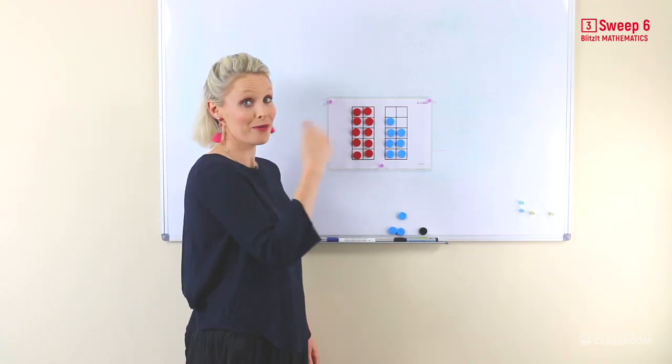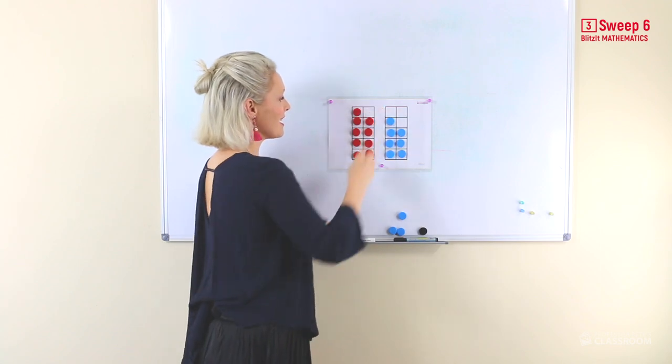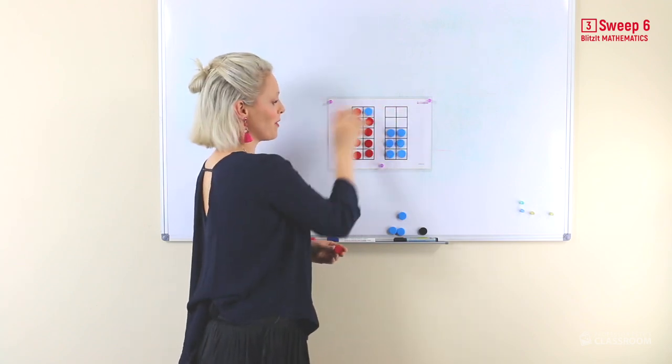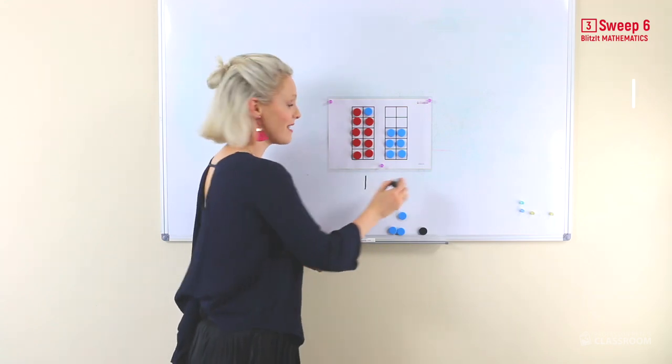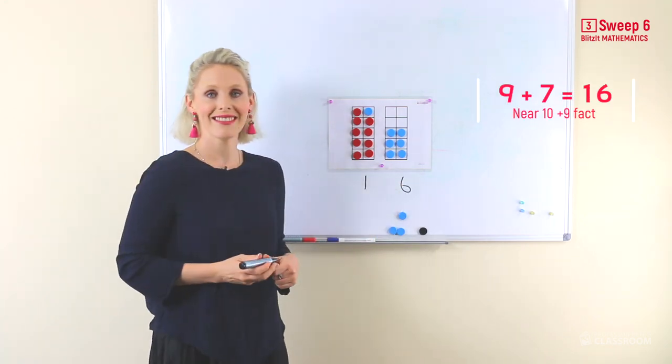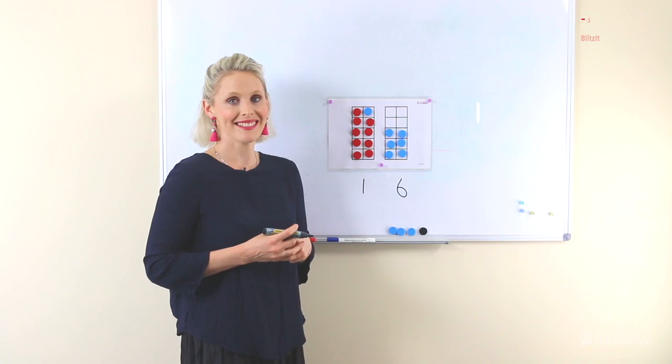So, one take away from seventeen is, one from here, put it over, one group of ten, six ones, that's right, sixteen. Well done.